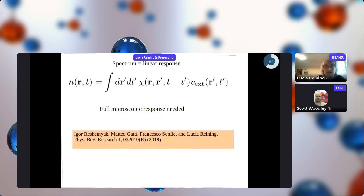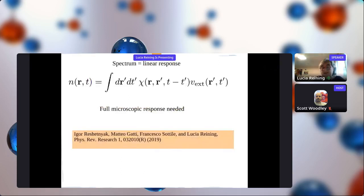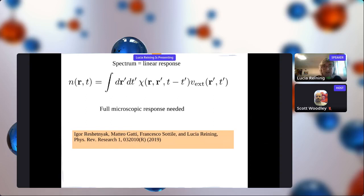What about excitons? We look at this in real systems - in real materials everything is not homogeneous, so you have a perturbation in one place at some time and look at the response in another place at another time. The response function depends on every place and every time - not at all homogeneous with many microscopic details. This was something people couldn't calculate including excitons until recently. Now we can. We can apply a potential in real space and real time to look at the density response.